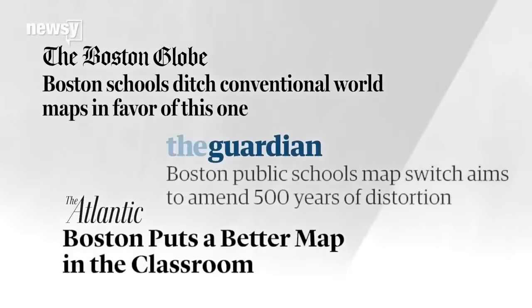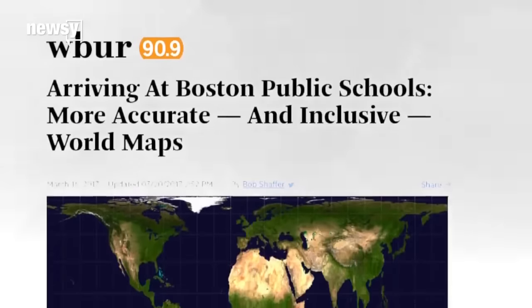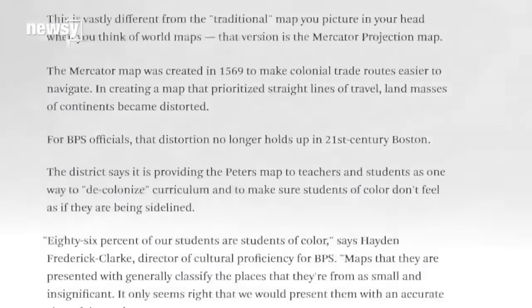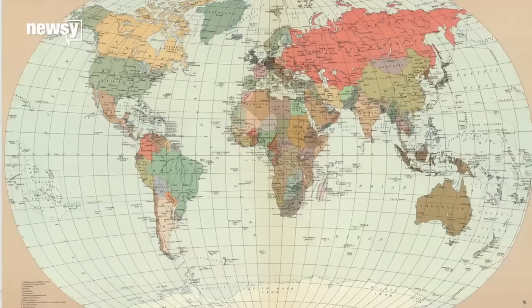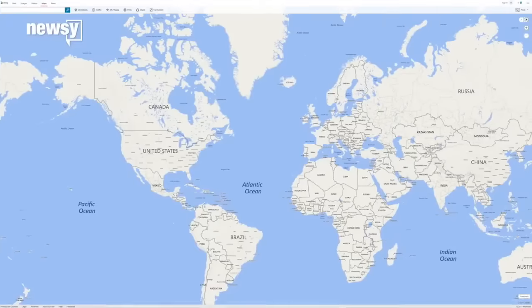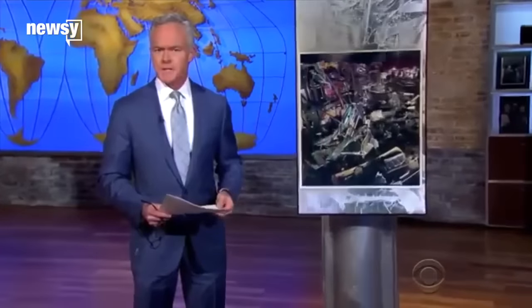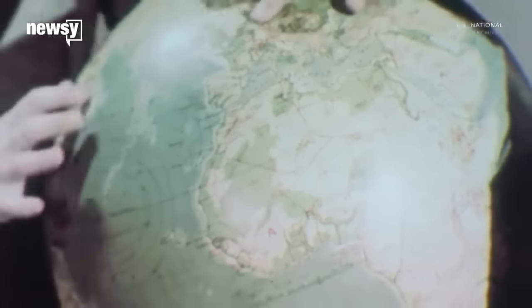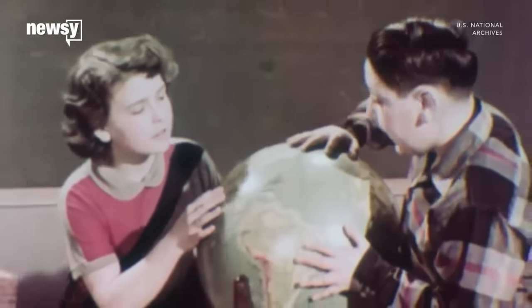The Gall-Peters hasn't gone away. Boston Public Schools recently said it will now use the Gall-Peters in classrooms to, quote, decolonize the curriculum. But it's not like the Gall-Peters is replacing all maps — you can find different types of maps everywhere. The UN logo has an azimuthal projection, and a homolosine projection appears in the background of CBS's evening news broadcast. But if you're really concerned about how to look at the world, you should probably just buy a globe.